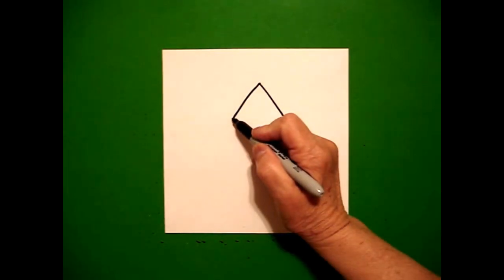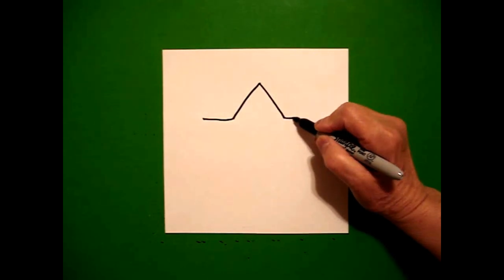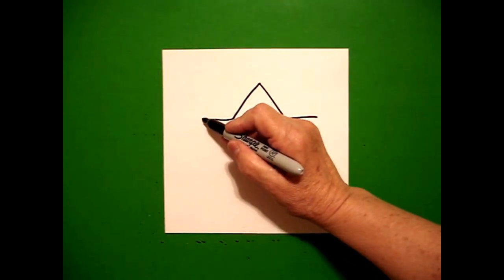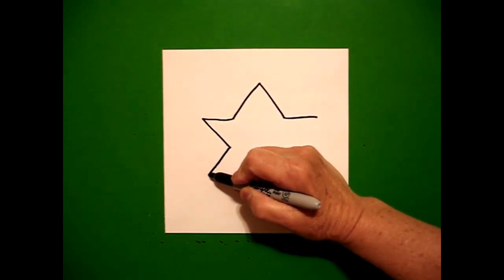Come back to the left, draw a straight line out on the left, straight line out on the right. Come back to the left, draw a straight diagonal in, straight diagonal out.